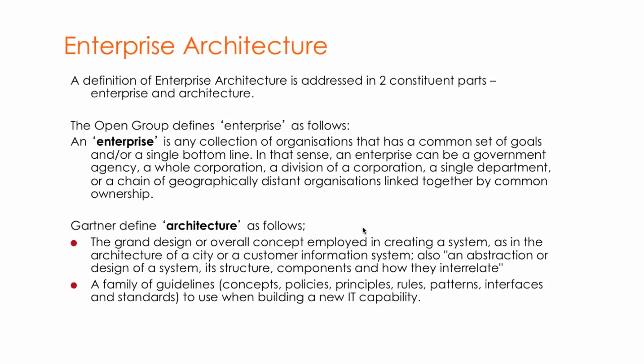Gartner defines architecture as a grand design or overall concept employed in creating a system — as in the architecture of a city or a customer information system — and also an abstraction or design of a system. In other words, an architecture is a family of guidelines when building a new capability: concepts, policies, principles, rules, patterns, interfaces, and standards. This is what makes up enterprise architecture.